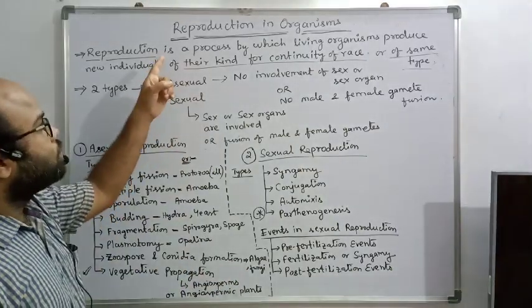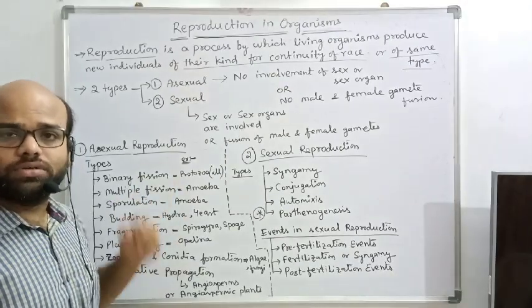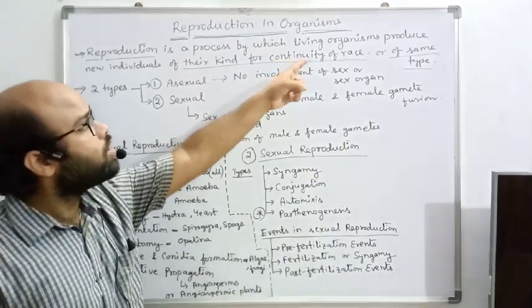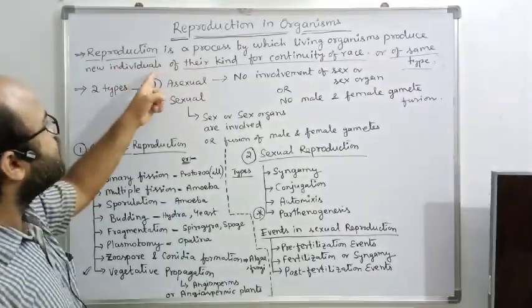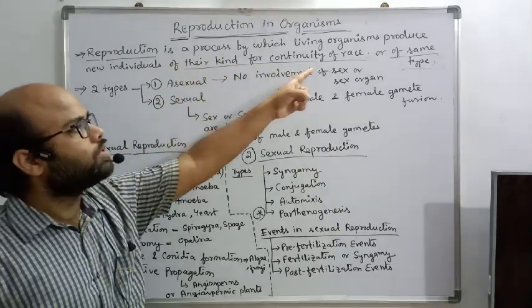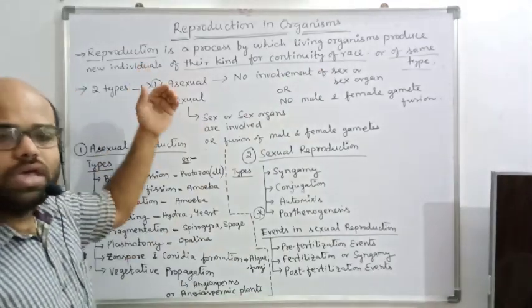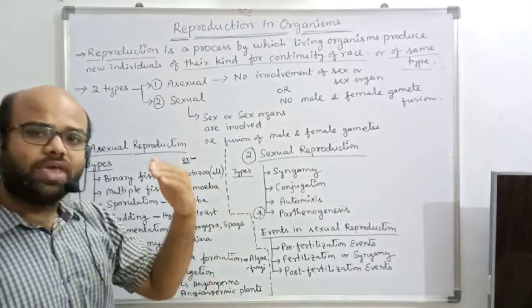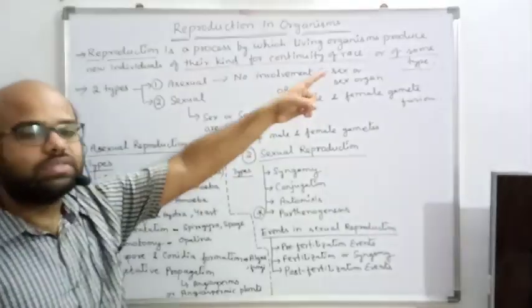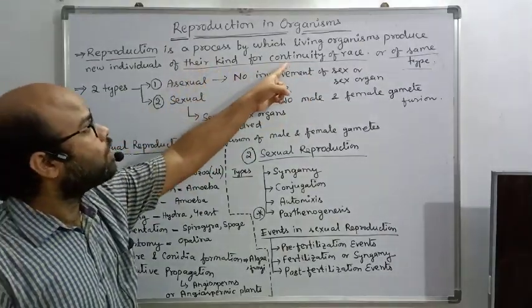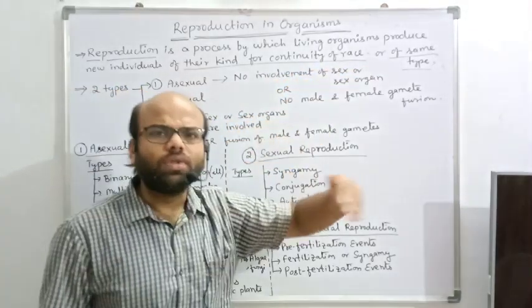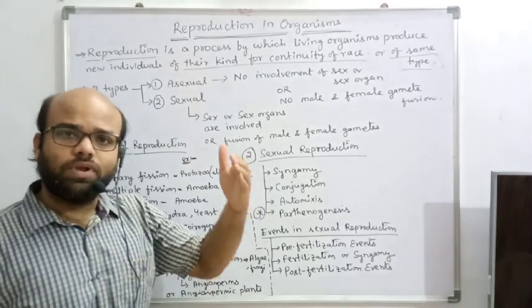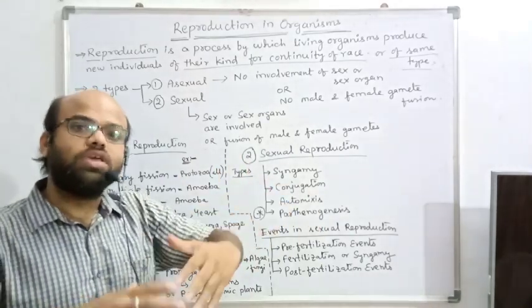So first of all we need to understand: what is reproduction? Reproduction is the process by which a living organism produces new individuals of their kind for continuity of race. A living organism can produce another living organism of the same type — that means their kind — for continuity of race. Race means a particular type of species or 'jati,' a particular type of living organism within a huge population.